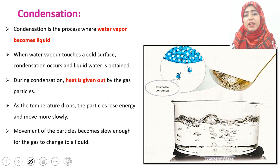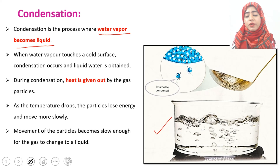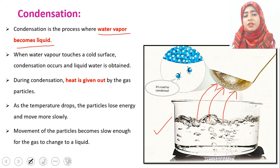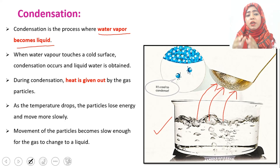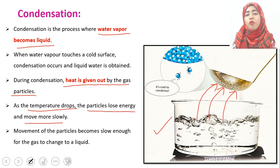The next change is condensation. Condensation is a process when gas changes into the liquid state. For example, if you have boiling water producing water vapors and you place a cold surface near the vapors, some vapors will touch the cold surface and start changing into liquid state. During this process, the gas particles give out heat when they touch the cold surface and the temperature drops. As the temperature of the gas particles drops, they lose kinetic energy and their movement slows down. Due to the slow movement they come closer to each other and start changing into liquid state.